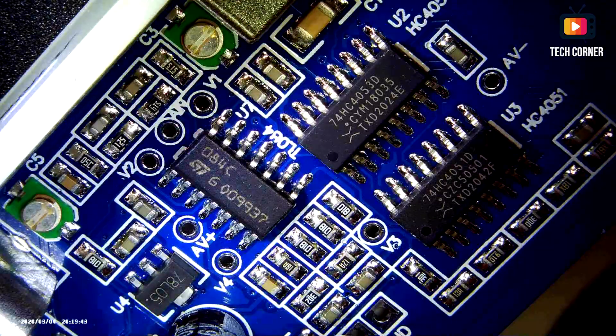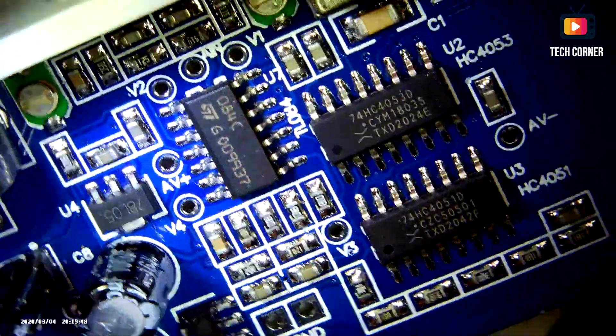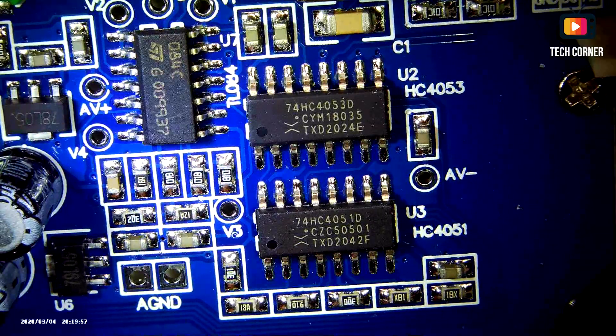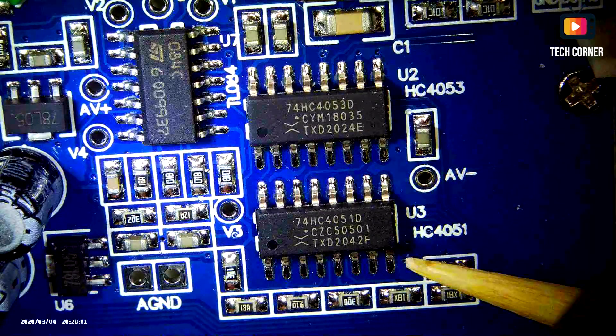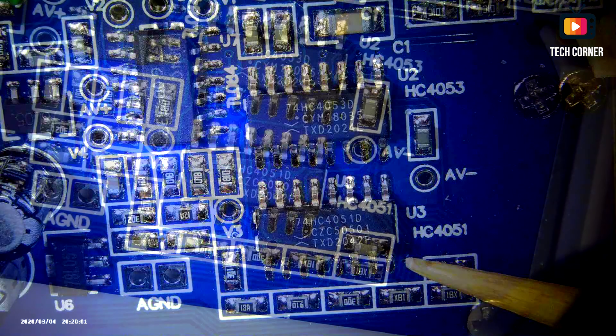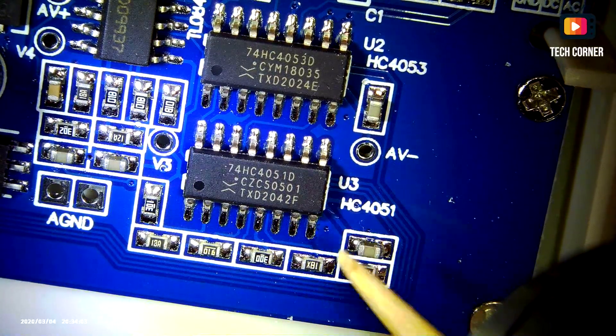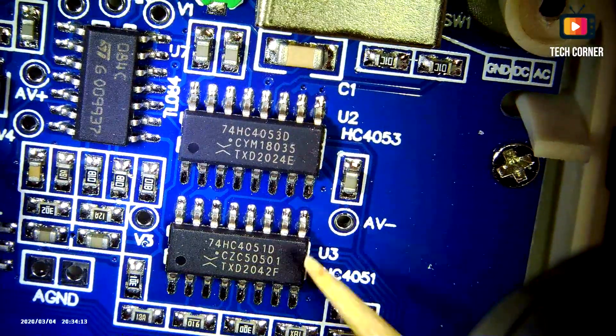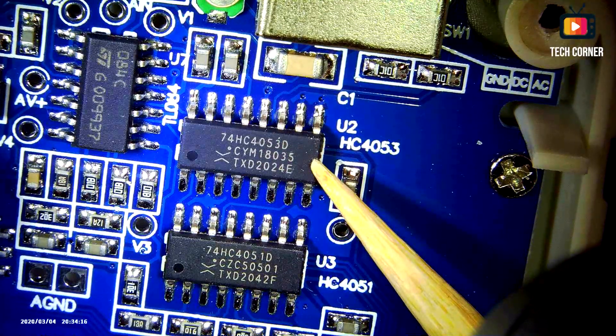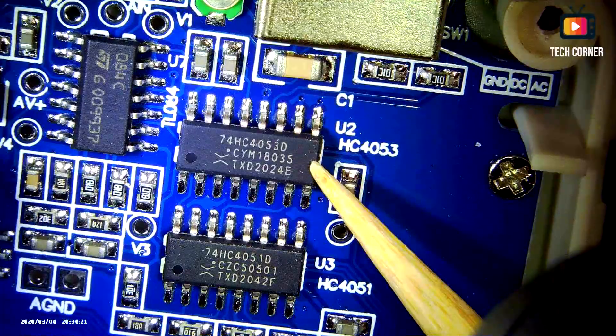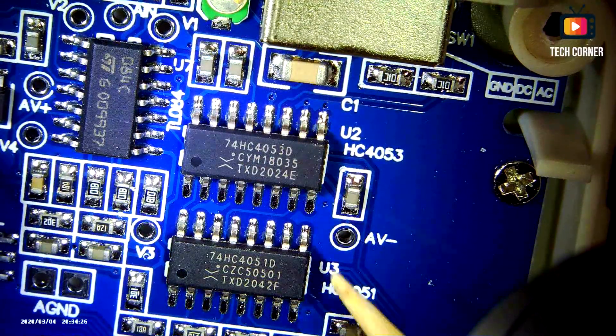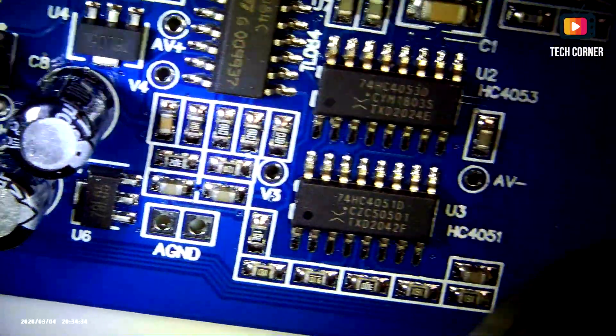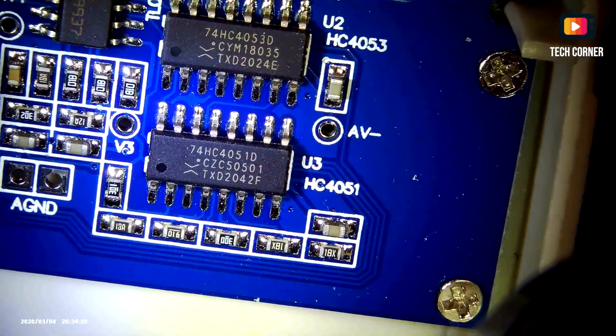And we also have the 74HC 4051D. And this one is an 8 channel analog multiplexer, demultiplexer. And we have also the 74HC 4053D and that one is a triple 2 channel analog multiplexer demultiplexer.